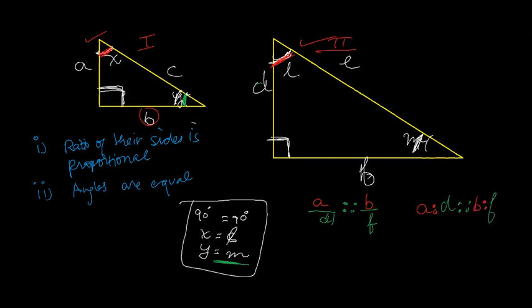Similarly, you can do that for other sides. B over F is proportional to... Now I will take the side C from this triangle, and C is opposite to the 90 degrees. The opposite of 90 degrees in this case is E. So it will be C over E.